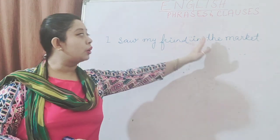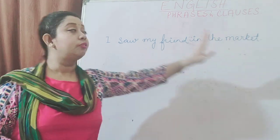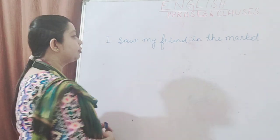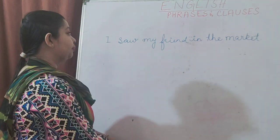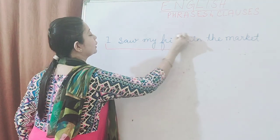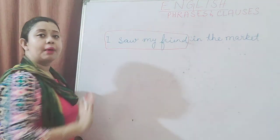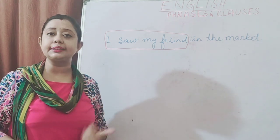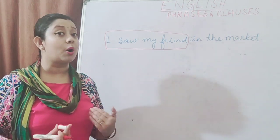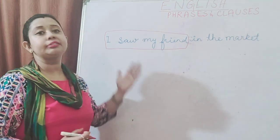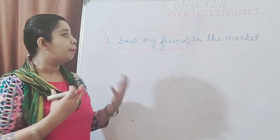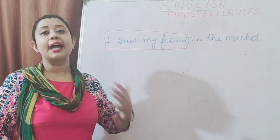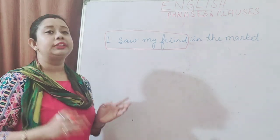To understand the part 'in the market,' we always need another part of the sentence. But if I omit 'in the market' and just write 'I saw my friend,' do you understand that part? Yes — we can all understand that it means I have seen my friend. It's not necessary to know where, but we can understand the meaning. Now do you see the difference? We have two different parts: 'I saw my friend' and 'in the market.' When I remove 'in the market,' I can still understand the meaning. But if I just leave 'in the market' alone, I don't understand the full meaning.